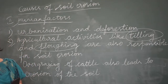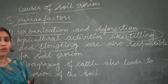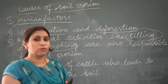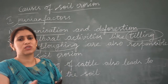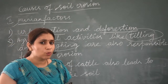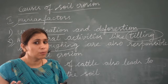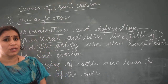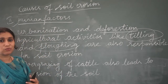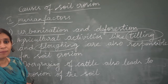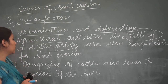When the soil is loosened through plowing, along with wind or heavy rains, it can move. So we can say that agricultural activities — the loosening of soil — are responsible for soil erosion.